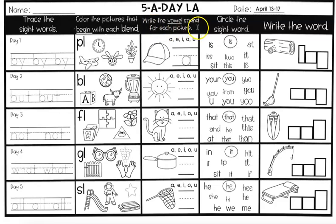This one, we're writing the vowel sound. That is a sun — write the vowel that you hear on the line. Next, circle the sight word Y-O-U — 'you.' Pay attention because some are spelled incorrectly; you want to circle the word 'you' spelled Y-O-U. There are three more in addition to the one already circled. The last box is a picture of a mop — write what you hear in the boxes.